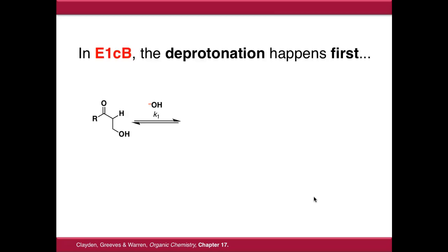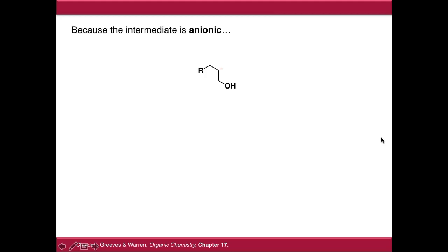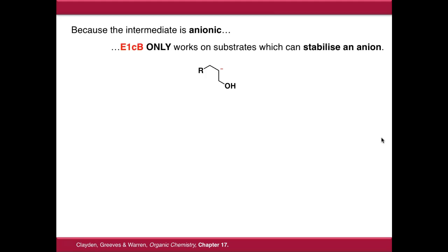The final elimination reaction is E1CB, and you can think of it as the kind of opposite of E1 — the deprotonation happens first. Rather than the leaving group leaving first to give a carbocation intermediate, the base deprotonates first to give a negatively charged anionic intermediate, and then in the second step that anion kicks out the leaving group to give our unsaturated product. Because the intermediate is anionic, E1CB only works on substrates which can heavily stabilise an anion.